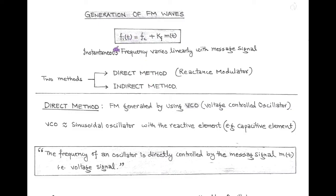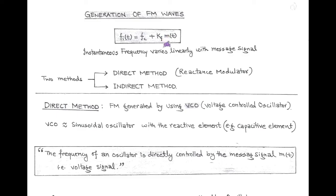In frequency modulation, the instantaneous frequency varies linearly with the message signal. The relationship is: instantaneous frequency equals carrier frequency plus Kf into m(t), where Kf is called frequency sensitivity of the modulator, measured in Hertz per volt.